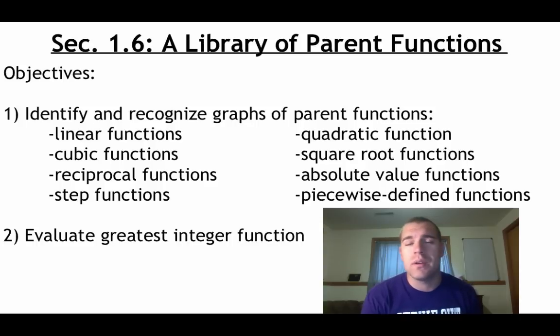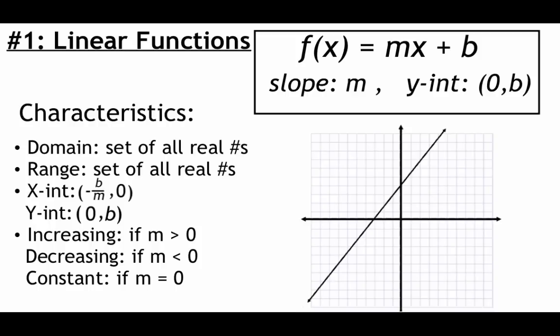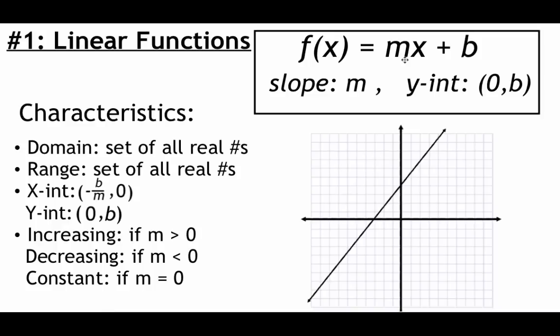For objective two, we are going to evaluate what's known as the greatest integer function. The first parent function we're going to take a look at is linear functions. A linear function is something in the form y equals mx plus b, or in function notation f of x equals mx plus b. If we're looking at the graph, linear just means a straight line. In the equation itself, we should be looking for a plain x with no powers on it at all.